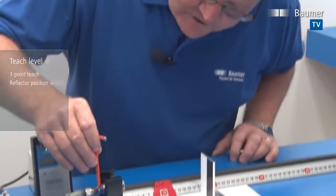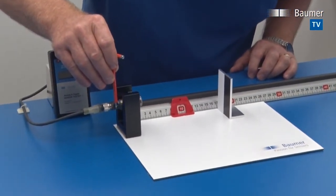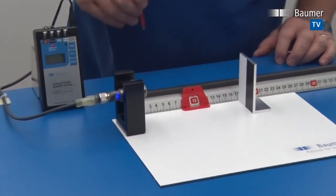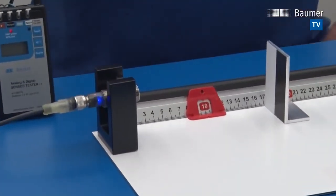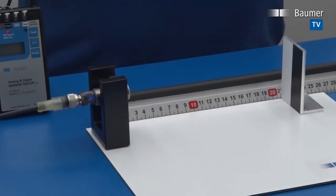Having gone through teach level one, let's move on to teach level two. Teach level two is accessed by using QTeach for four seconds. After four seconds, the LED flashes at twice the speed as before. The difference between teach level one and teach level two is